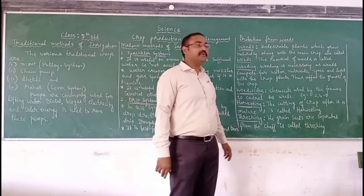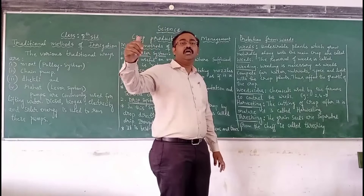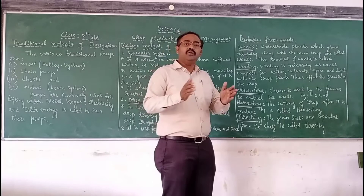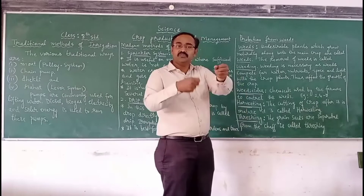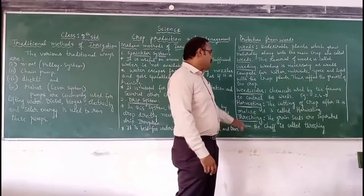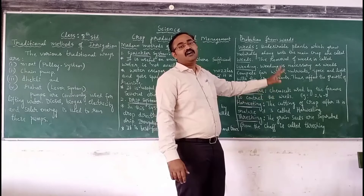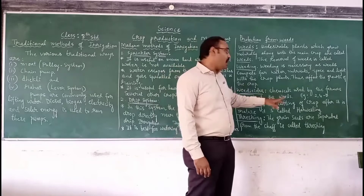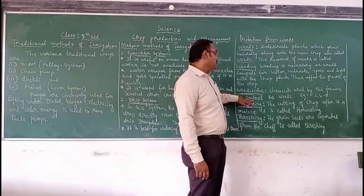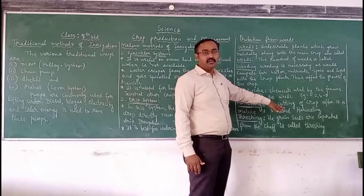Weeds have to be removed. The process of removal of weeds is called weeding. Several methods are used by farmers to remove the weeds. Some farmers use chemicals and some farmers use a sickle to cut the weeds. Weedicides are chemicals used by farmers to control the growth of weeds. For example, 2,4-D is a chemical used to control and kill the weeds.